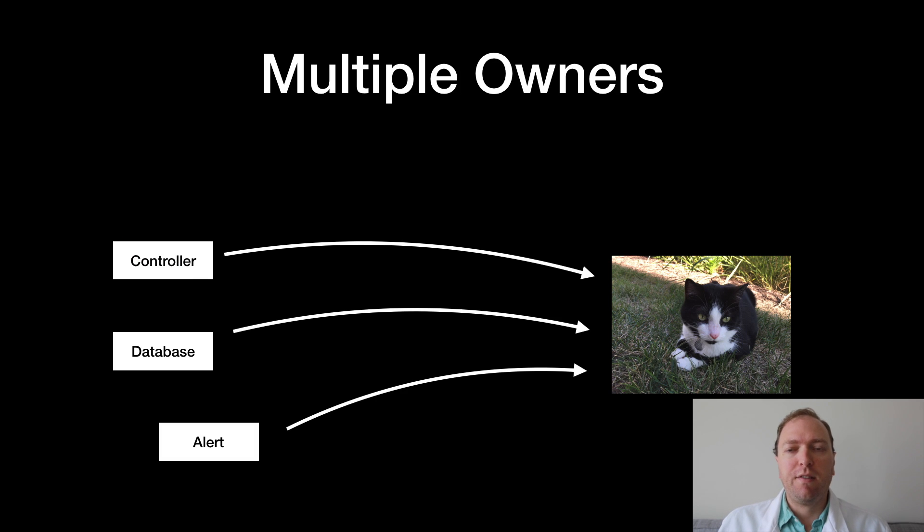The problem with this approach is that in real-world applications objects often have multiple owners. For example, here the cat picture is owned by the controller and the database and the alert. And ARC extends this concept of ownership to handle multiple owners.